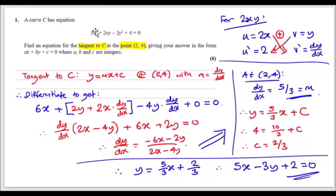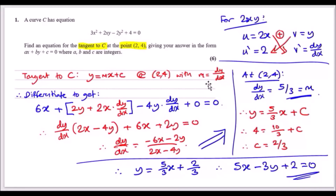Question one: a curve C has the given equation — a mixture of x's and y's set to zero. We need to find the equation for the tangent to C at the point (2, 4), giving the answer in a specific form where a, b and c are integers. A tangent to C is just a straight line, y = mx + c. Because it's a tangent, we need to find the gradient at the point (2, 4) by differentiating and substituting those values into the derivative.